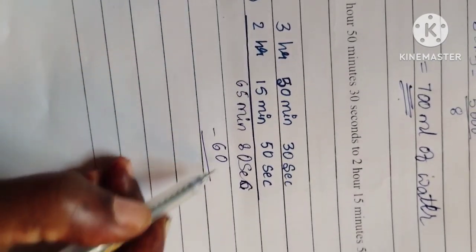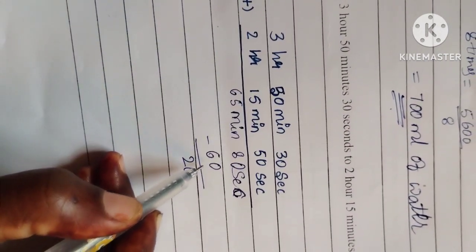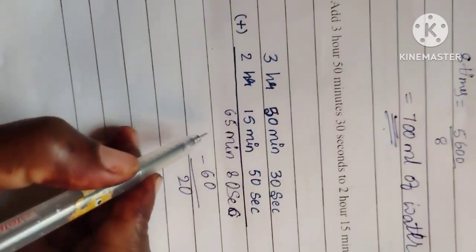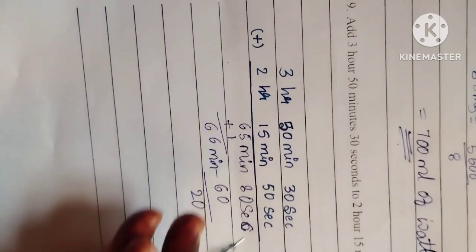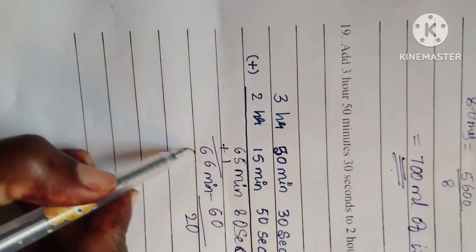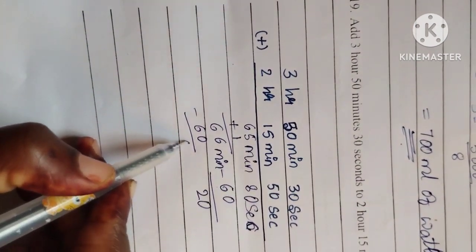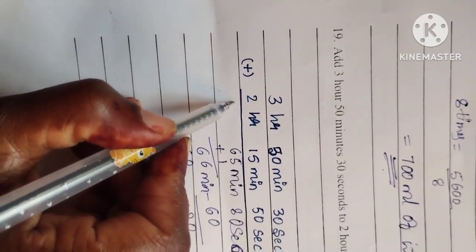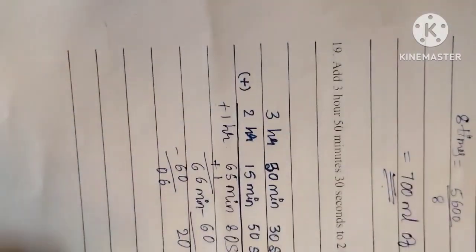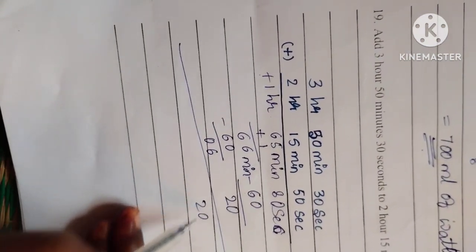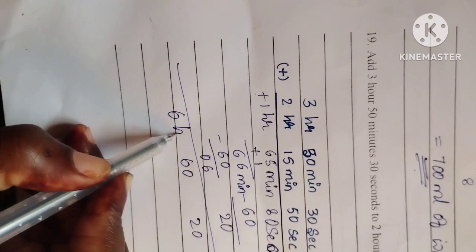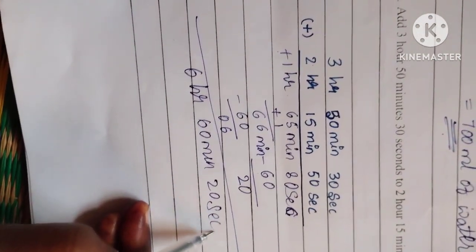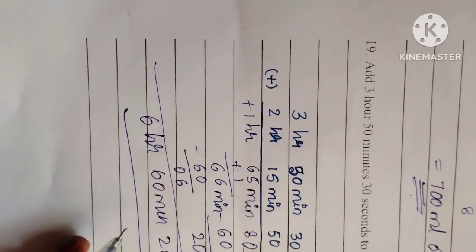Since we have 80 seconds, 1 minute equals 60 seconds, so subtract 60 to leave 20 seconds and carry 1 minute. Now we have 66 minutes; subtract 60 to leave 6 minutes and carry 1 hour. Final answer: 1 hour 34 minutes 40 seconds — the result after borrowing gives 6 minutes 20 seconds.